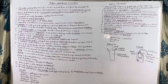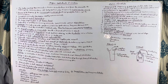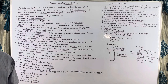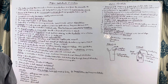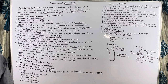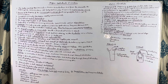These animals have an incomplete digestive system, meaning only the mouth is present and the anus is absent. As a result, undigested food also leaves the animal through its mouth. Digestion is both intracellular and extracellular.